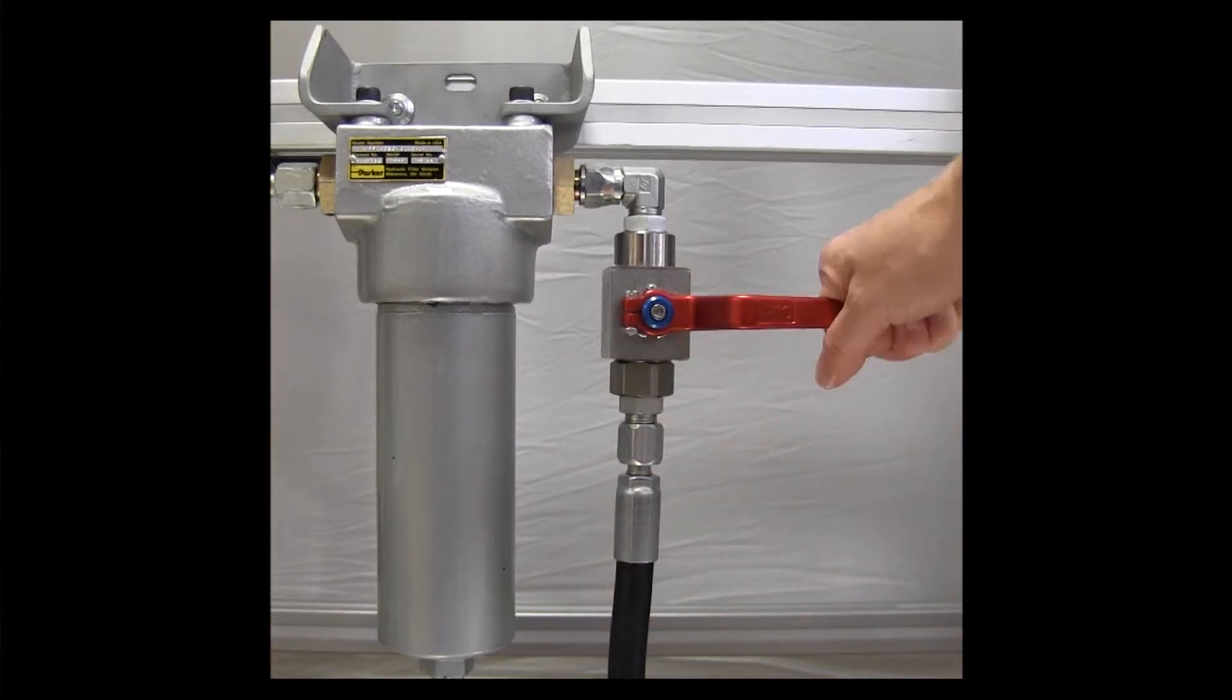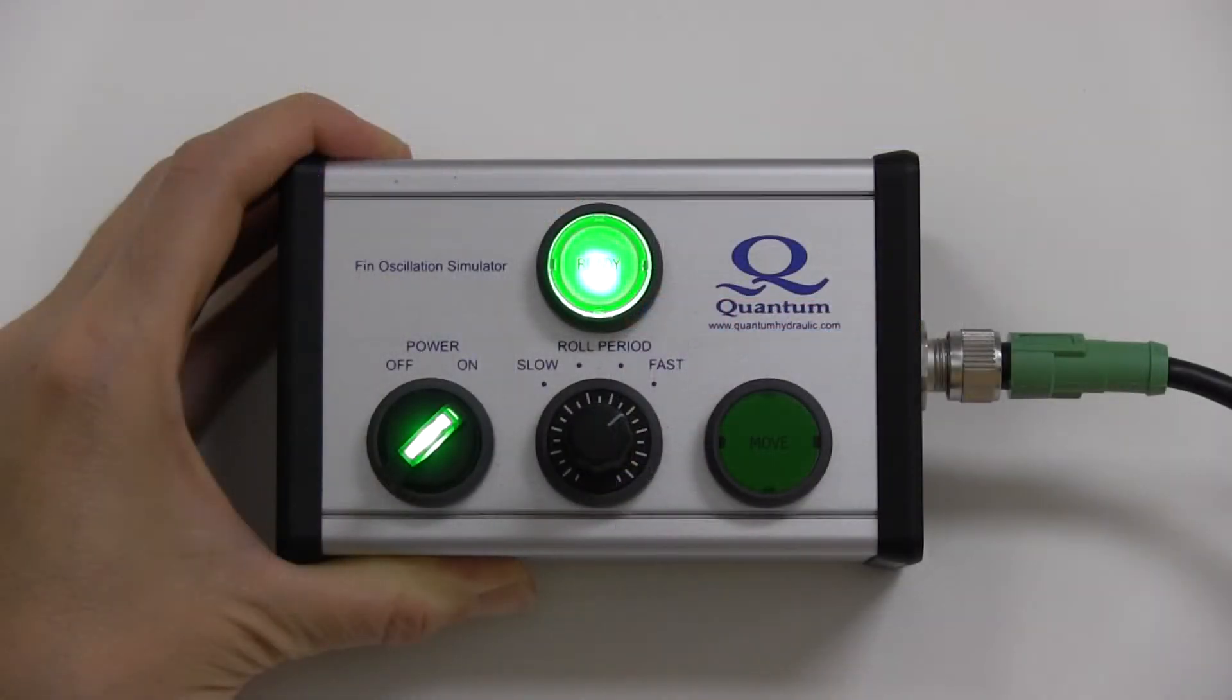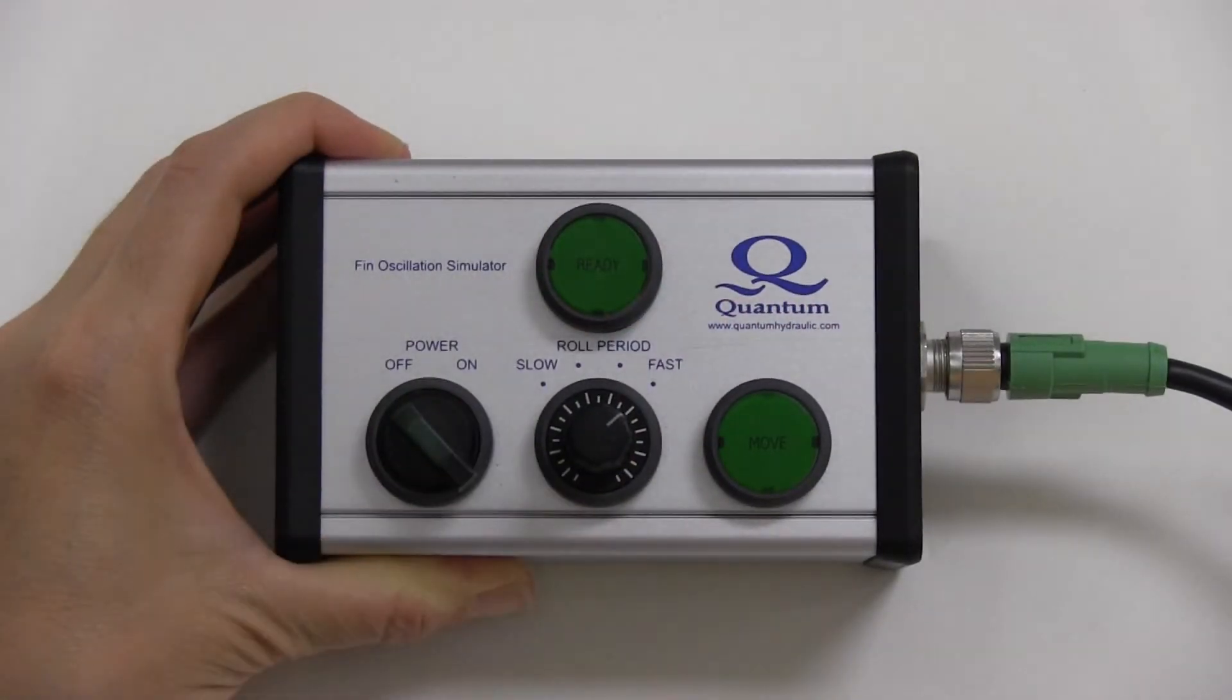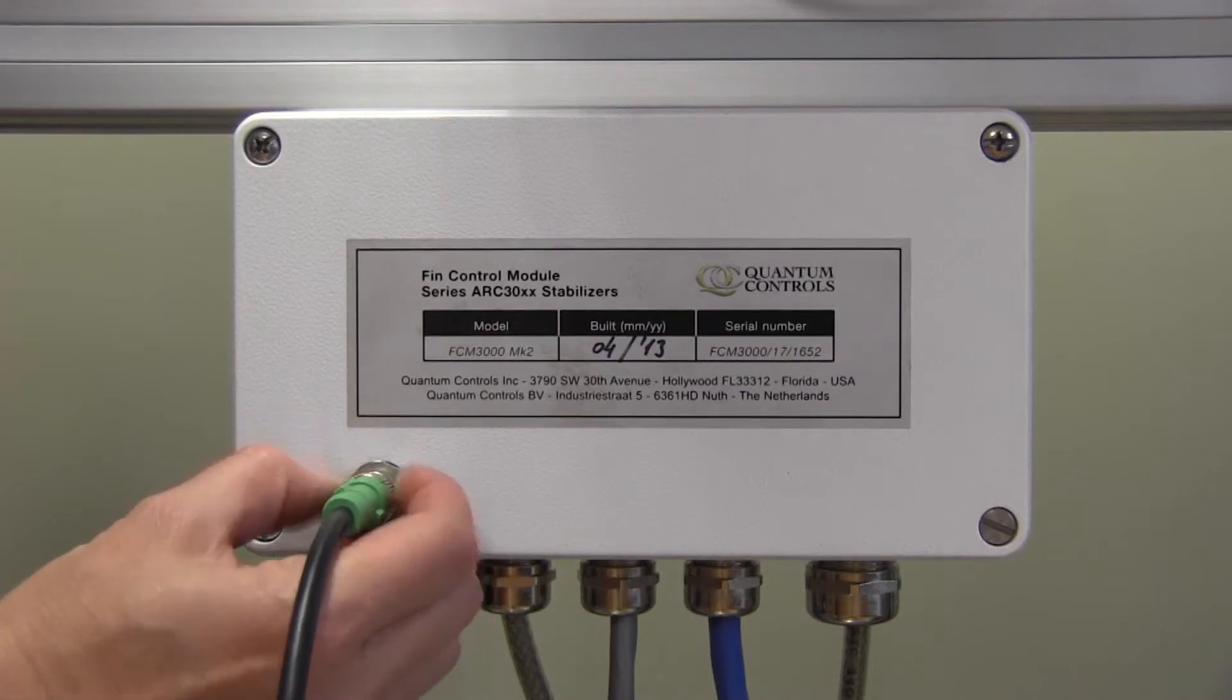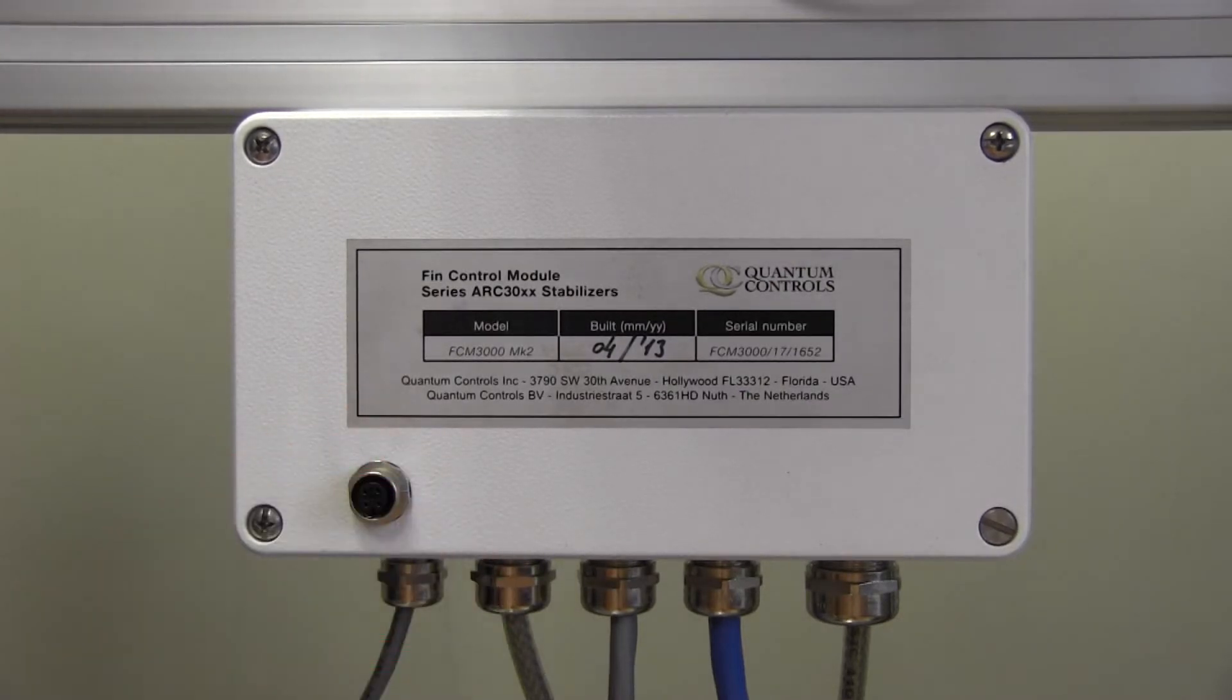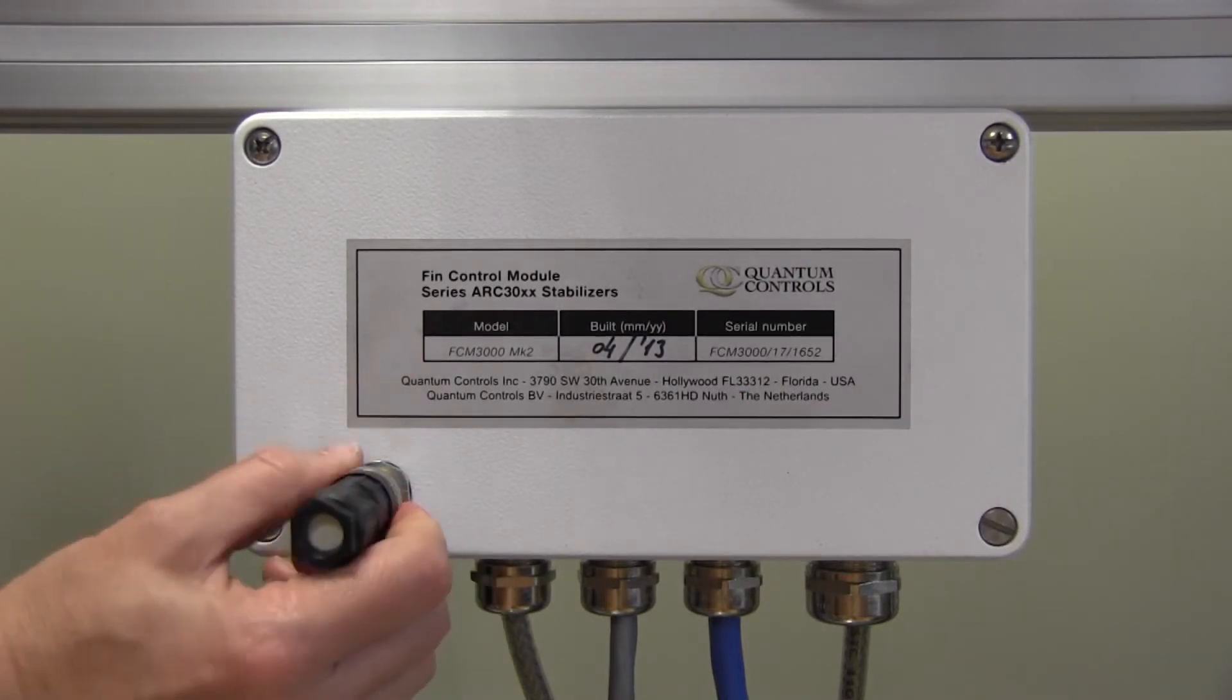Close the hydraulic isolation valves. Turn the FIN Oscillation Simulator power switch to the OFF position. Disconnect the cable from the FIN Oscillation Simulator and the FIN or effector control module, and install the dummy connector cap onto the FIN or effector control module.